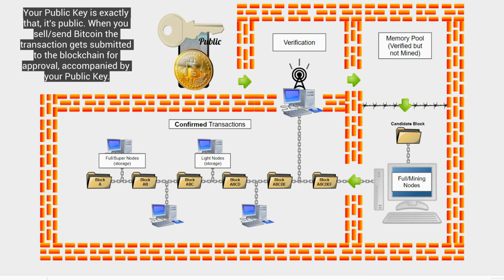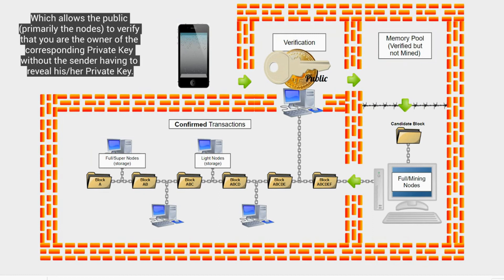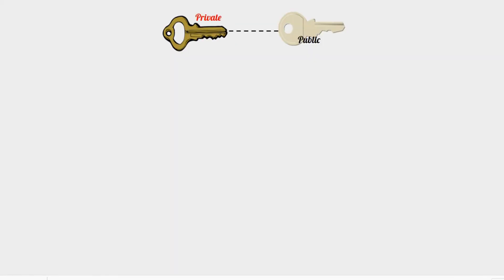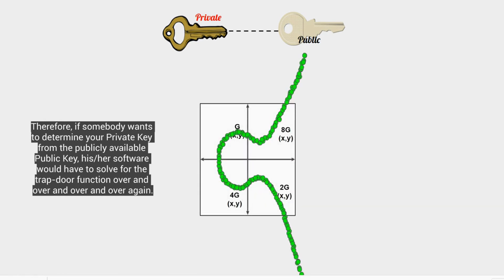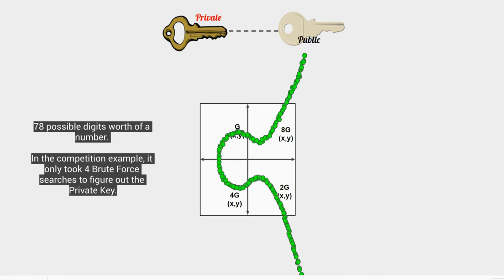So what does all of this mean? Your public key is exactly that. It's public. When you send Bitcoin to somebody or sell it using an exchange, the transaction gets submitted to the blockchain for approval along with your public key, which allows the public to verify that you are the owner of the corresponding private key without the sender ever revealing his or her secret private key. Therefore, if somebody wants to determine your private key from the publicly available public key, his or her software would have to solve for the trapdoor function over and over and over and over 78 possible digits worth of a number to compute the proper private key.